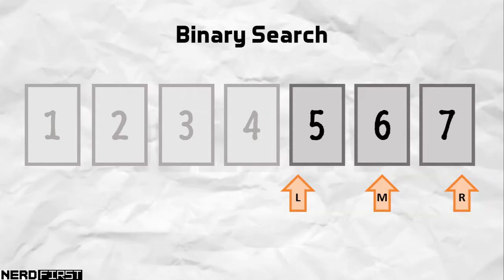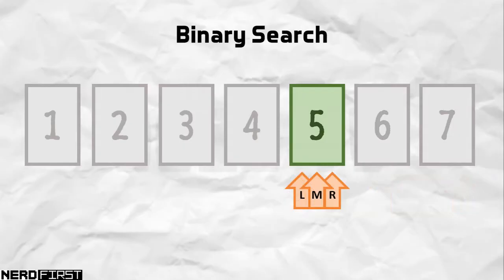Because 6 is larger than 5, again we eliminate that half of the list, we shift our pointers, and we find ourselves looking at just one element, 5, the element we want to look for. So in this list of 7 items, with just 3 comparisons, we end up at the right place, we end up having found the element.